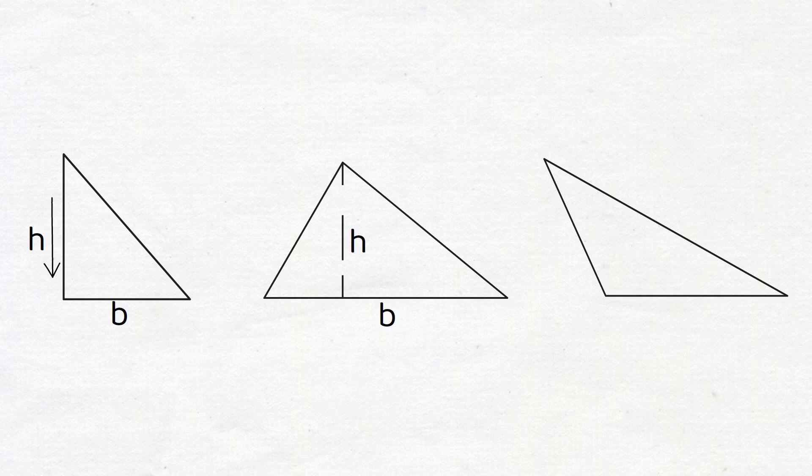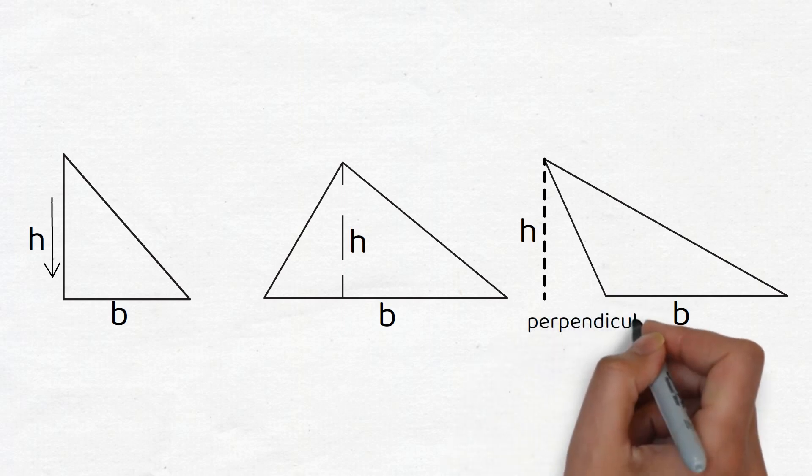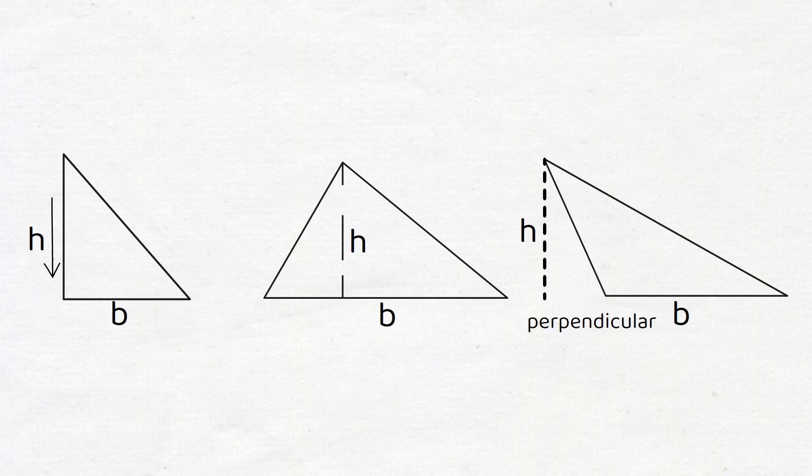The triangle on the right has an obtuse angle. Notice how the perpendicular from the top vertex never actually reaches the opposite side, as the opposite side segment does not extend far enough out to reach the perpendicular line. Nonetheless, we still consider that line to be a perpendicular, since if the lines were extended, they would intersect at right angles.